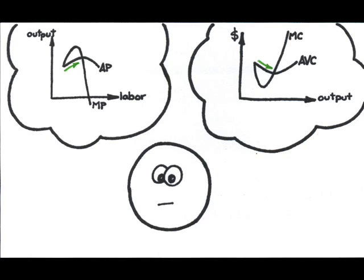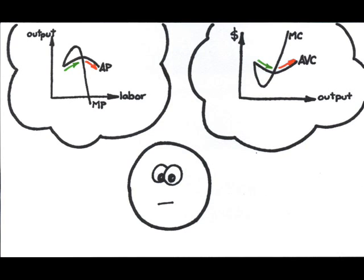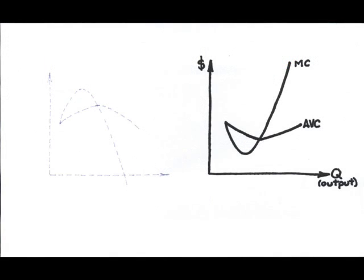Now, what happens when there's declining average product or decreasing productivity? This is reflected in the cost diagram by increasing per unit costs. As your resources become less productive, the more expensive it is per unit to produce your product. In the end, because we can see all the productivity information reflected in the costs, we no longer need to use the product curves.